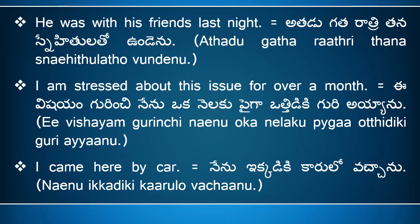'I am stressed about this issue for over a month' means 'ee vishayam gurinchi, nenu okanelakupayi ga otthi di ki guri ayyanu.' Here, 'I' means 'neenu,' 'stress' means 'otthi di,' 'I am stressed' means 'nenu otthi di ki guri ayyanu,' 'about' means 'gurinchi,' 'this' means 'ee,' 'issue' means 'vishayam.' 'For over a month' means 'okanelakupayi ga' — 'over' means 'paiga,' 'a' means 'okan,' 'month' means 'nela.' So the full sentence is 'ee vishayam gurinchi, nenu okanelakupayi ga otthi di ki guri ayyanu.'